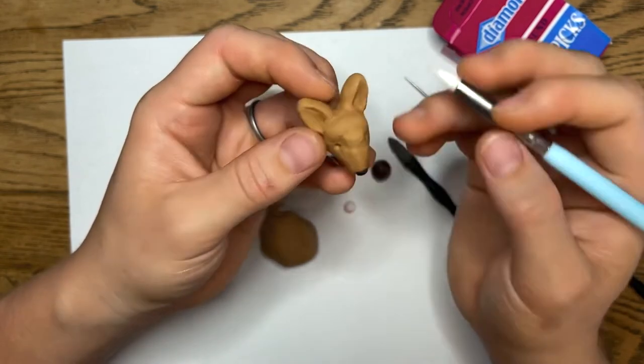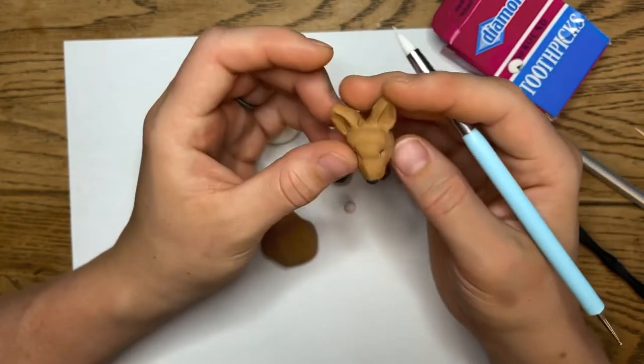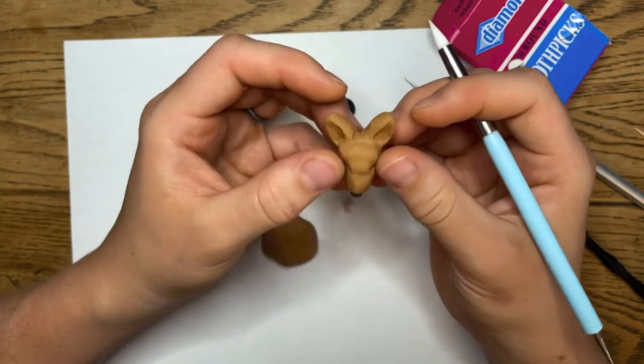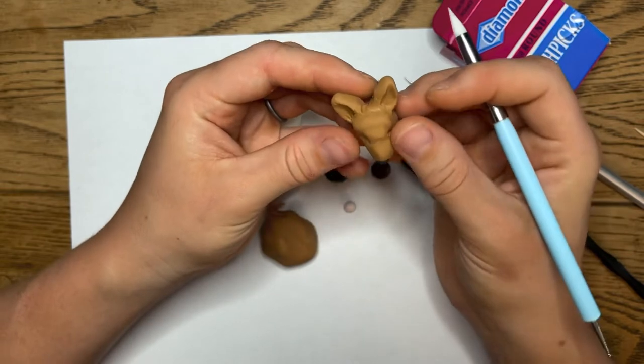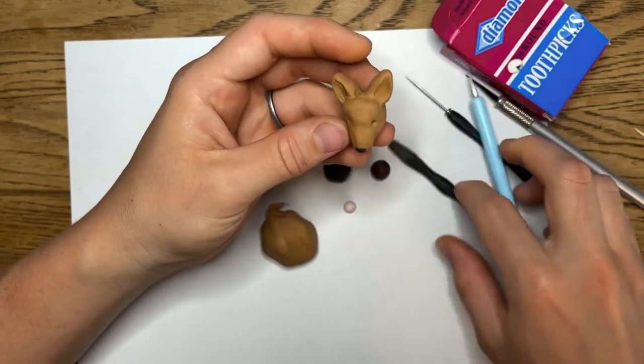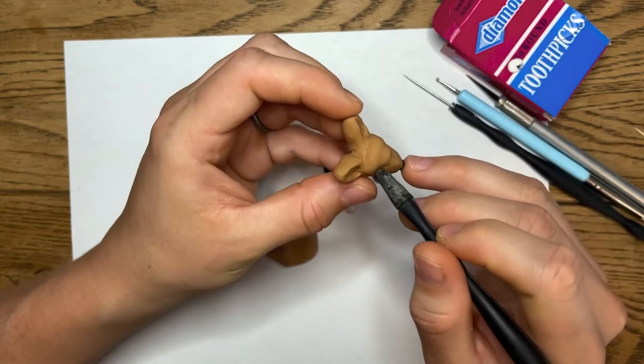And then continue to smooth out. Continue to make sure that it's always a sloping down momentum for the face. Sometimes the ears may be too close together or too far apart, so just deduce based on your dog. Indent the eyes one more time. And then we're going to put the eyes in.